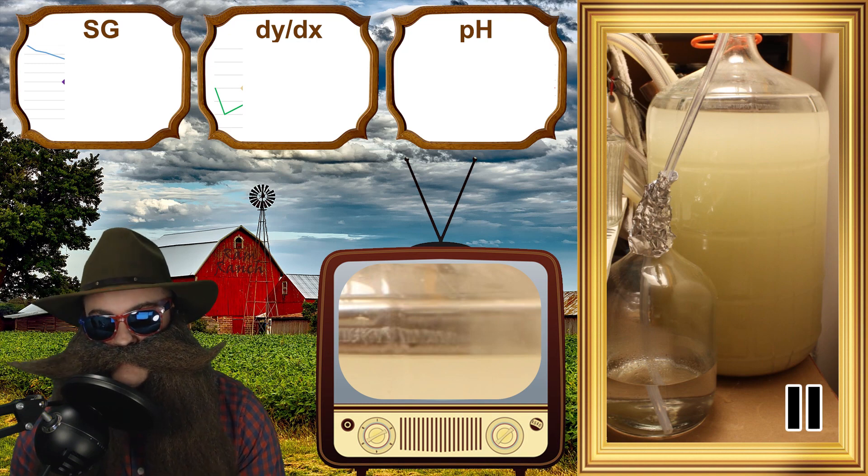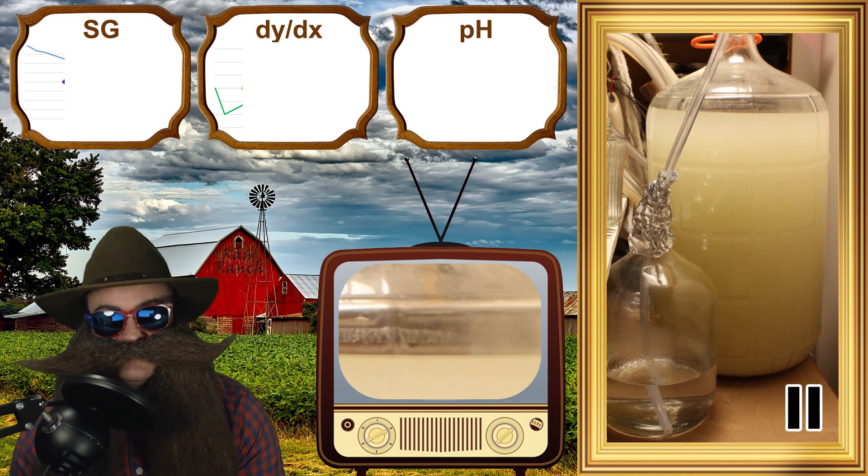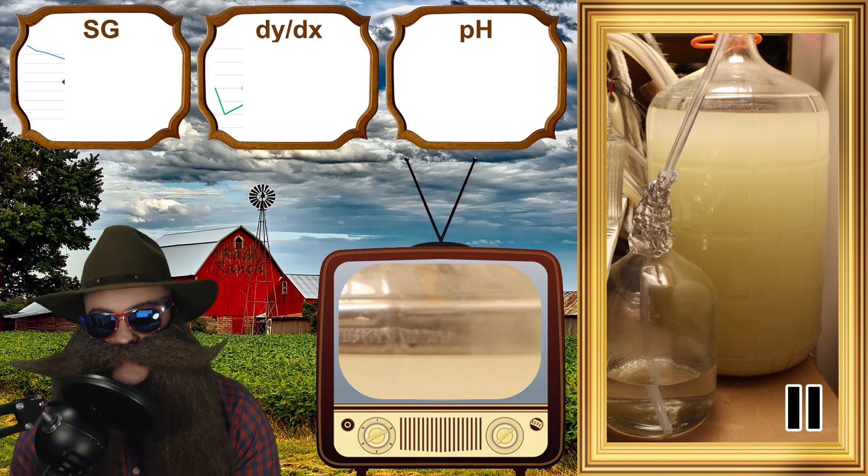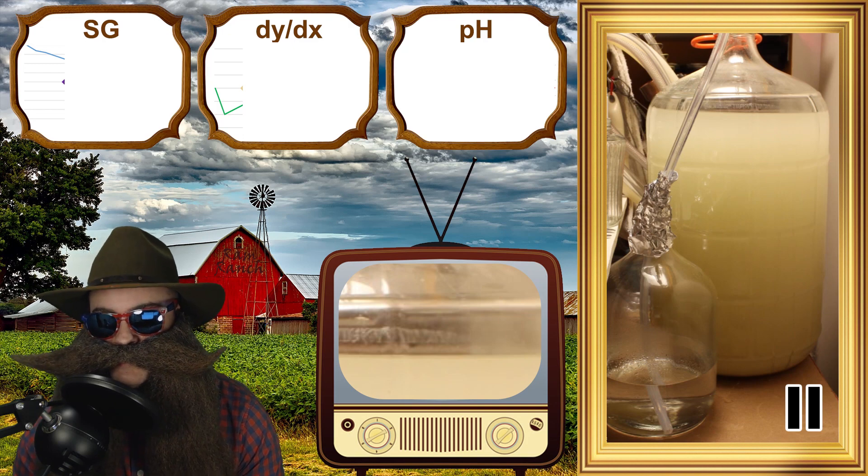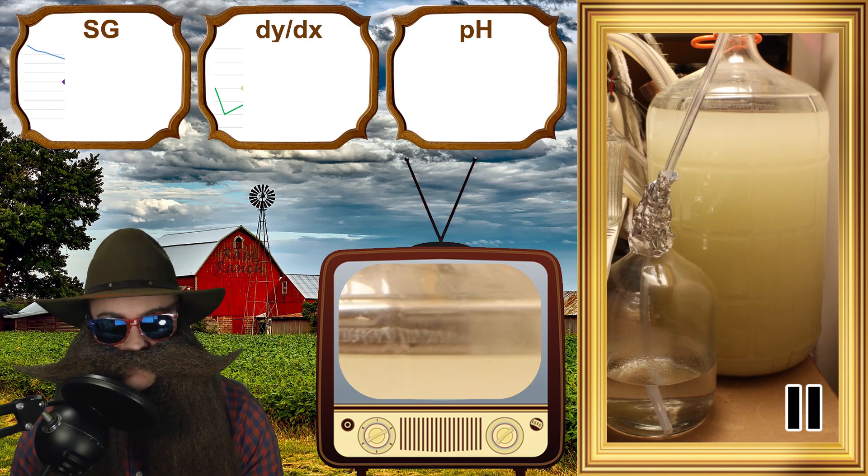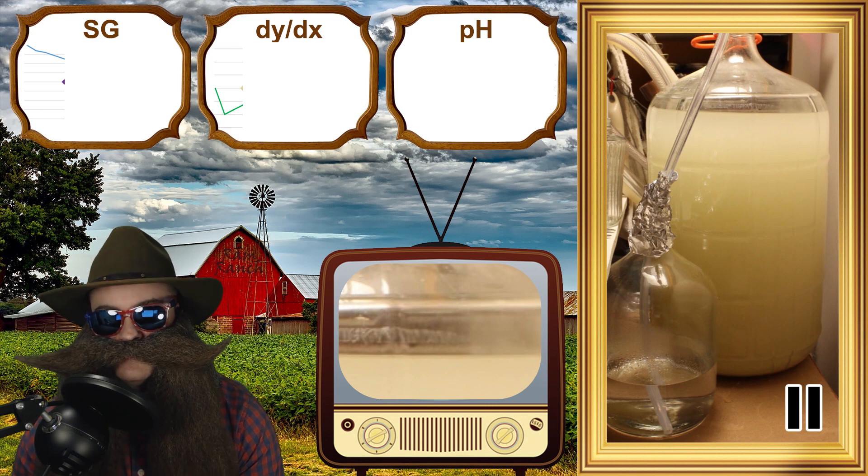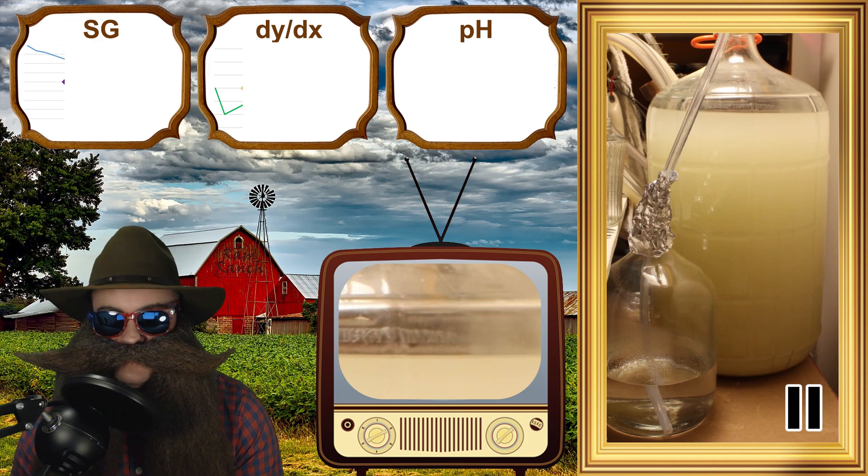I booted up my Beersmith, which is homebrewing software, and I doctored up my sugar wash, and Beersmith said I needed about 16 grams of yeast. I did a yeast addition to my glass fermenter to get up to 24 grams of yeast. I did additions to the other fermenters to get 16 grams, 18 grams, and 20 grams, respectively.